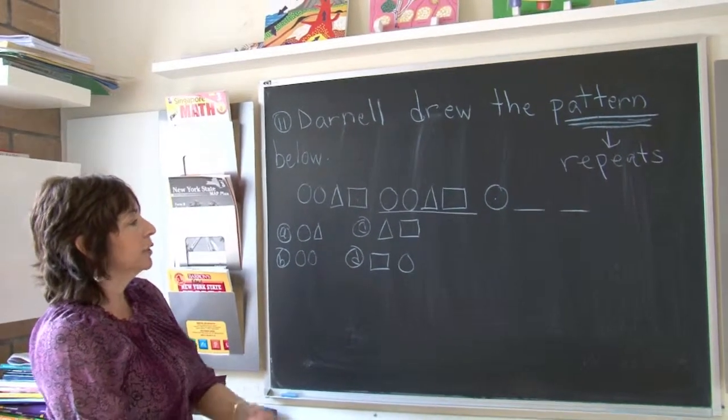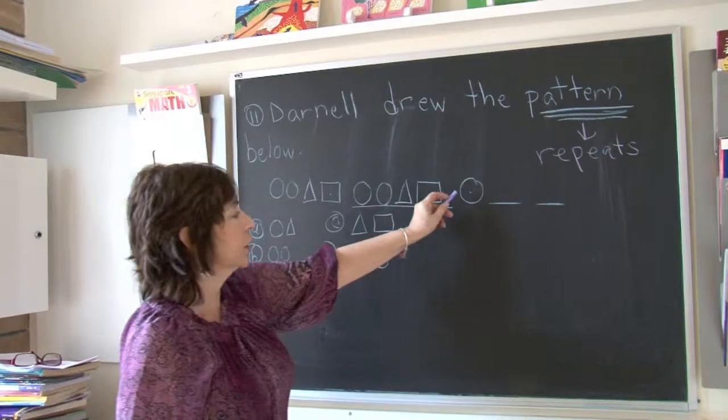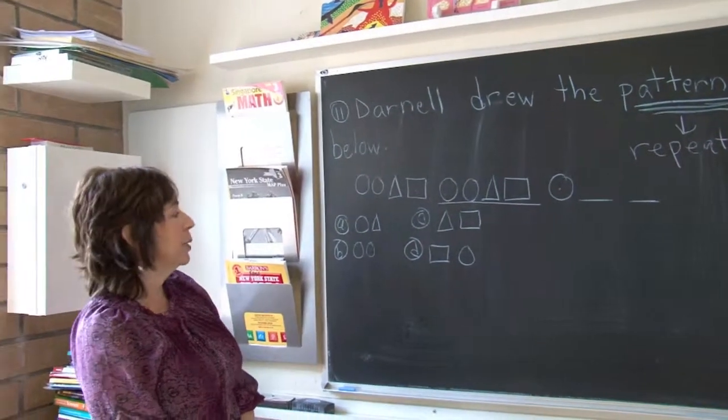Circle, circle, triangle, square. So we only have one circle here. So what's going to make this pattern repeat?